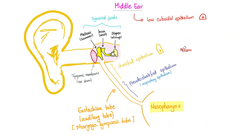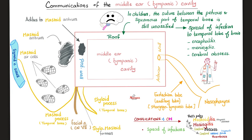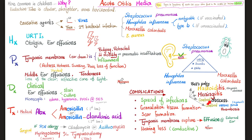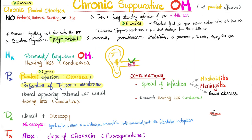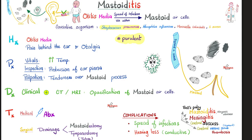The problem with otitis media, or infection of the middle ear, is that it can spread. Since your brain is above the middle ear, it can spread through the roof — especially in a young child because these bones have not ossified yet. This ear infection can become brain infection, including brain abscess. Also, otitis media can spread backwards to the mastoid air cells causing mastoiditis, which can spread to your sigmoid venous sinus. It can also become brain abscess, encephalitis, or meningitis. The complications of acute otitis media include cerebral abscess formation. Acute otitis media can become chronic otitis media, which can also spread to your brain. Otitis media can lead to mastoiditis, and mastoiditis can lead to brain abscess.